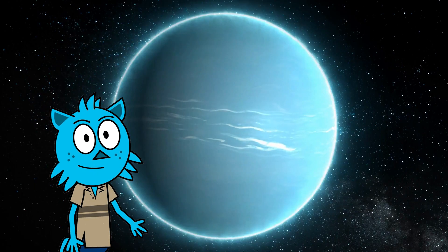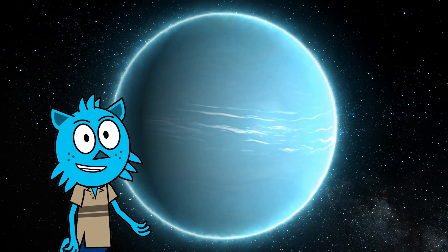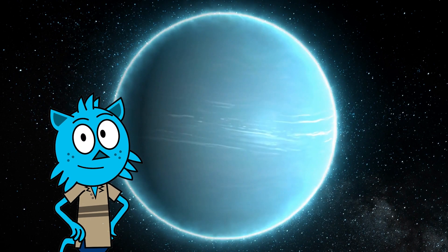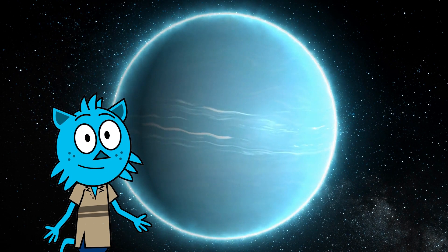Meet Uranus, a chilly and blue planet that rolls around on its side. It's a real oddball. Uranus is unique because it rotates differently from most other planets.